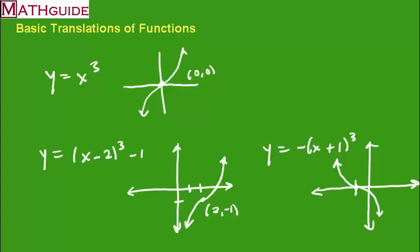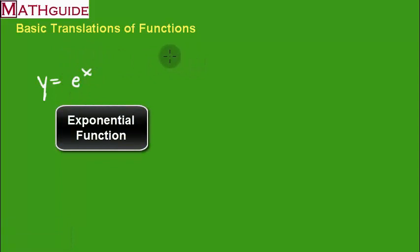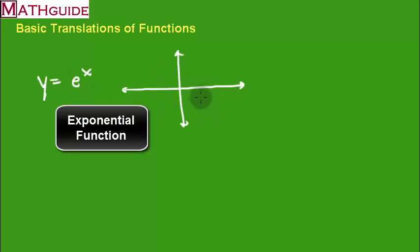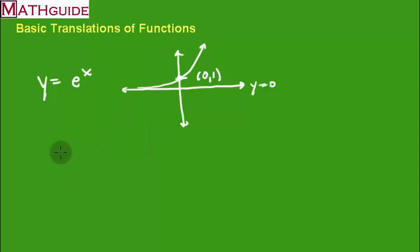Now our last function — the exponential — is probably the most interesting. You can use any base you want; I'm using base e, but base 2 or base 5 works too. Any positive value greater than 1 will give this shape: the curve hugs the x-axis because there's an asymptote at y equals 0, and it always goes through the point (0, 1). That's what the base exponential curve looks like regardless of the base, as long as it's greater than 1.